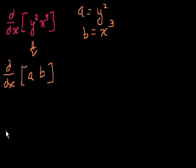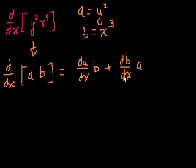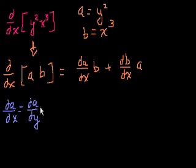We can apply the product rule here. The derivative with respect to x of a times b equals the derivative of a with respect to x times b, plus the derivative of b with respect to x times a. Now, the derivative of a with respect to x is where the chain rule comes in: it equals the derivative of a with respect to y times the derivative of y with respect to x — the dy terms cancel.